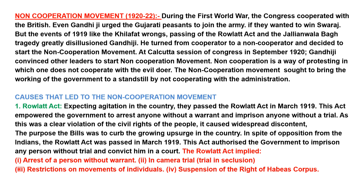The Rowlatt Act implied the following: number one, arrest of a person without warrant — a warrant being an official permission to do something; number two, an in-camera trial, meaning the trial excludes all spectators or those not legally required in the courtroom; number three, restriction on the movement of individuals; and number four, suspension of the right of habeas corpus — a court order demanding a public official deliver an imprisoned individual to court and show a valid reason for that person's detention.